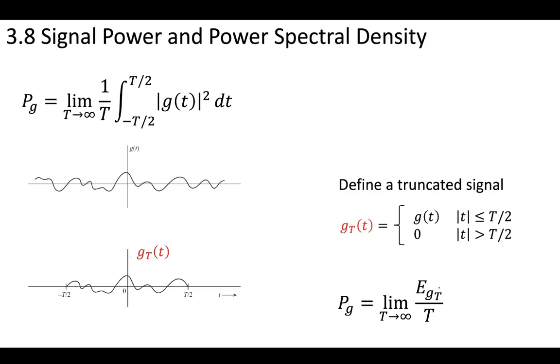So with our truncated signal, we can take the energy of that signal, divide it by a period, and then we can make this go larger and larger. So we can say that this just keeps getting bigger to minus infinity, and this one keeps getting bigger to infinity. And if we were to do that, we can write a power signal in a way that helps us extend our energy signal concept.